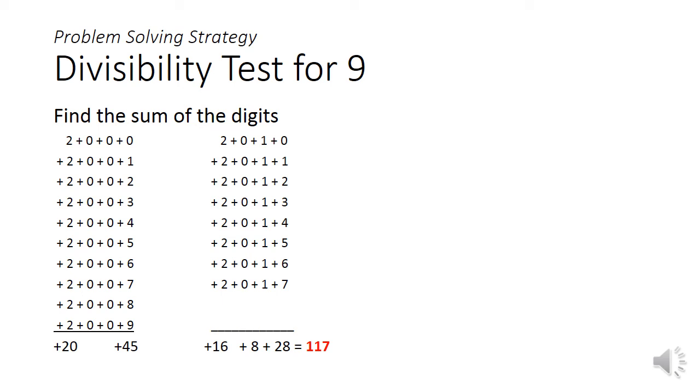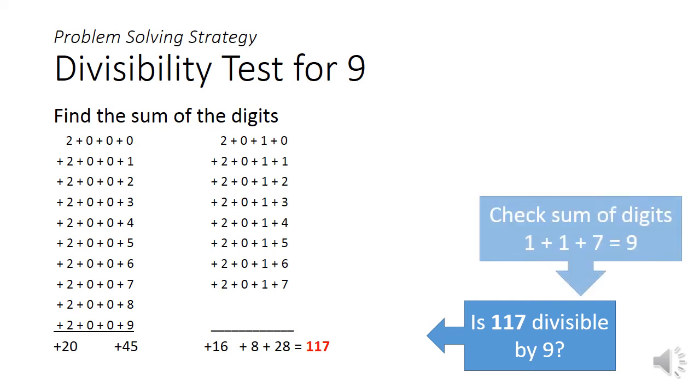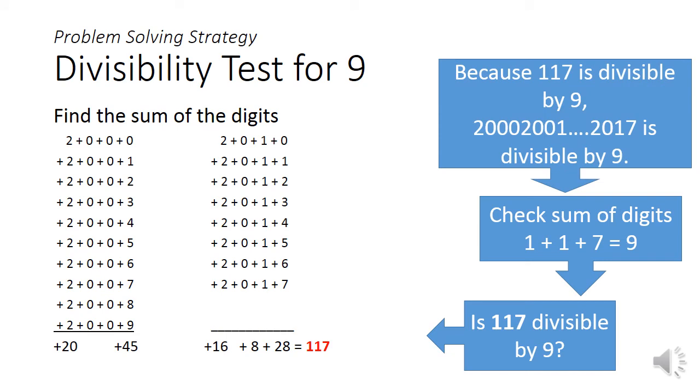Recall the divisibility test for 9. We need to find the sum of all the digits. Using brute force, you'll get 117. So is 117 divisible by 9? Let's do another sum of digits, and that will give you 9, which is clearly divisible by 9. Hence, 117 is divisible by 9, and the huge number will also be divisible by 9. Since it is perfectly divisible, the remainder has to be 0.